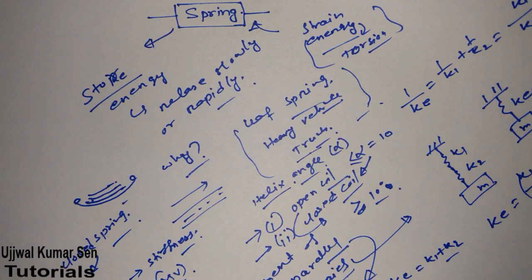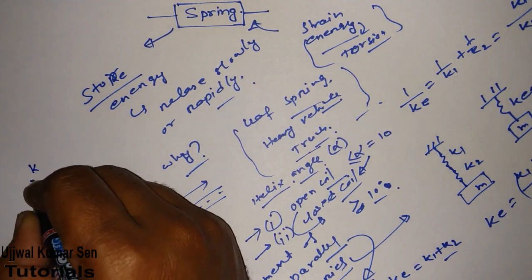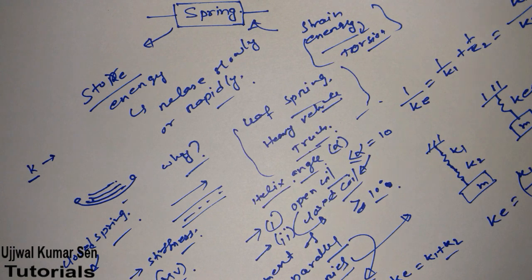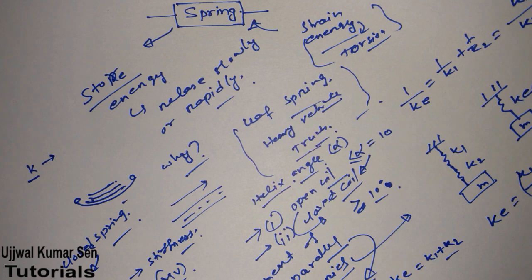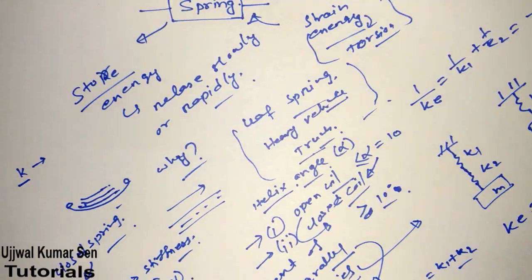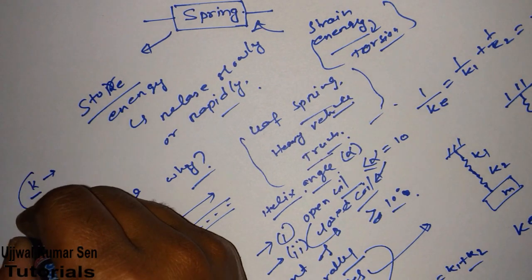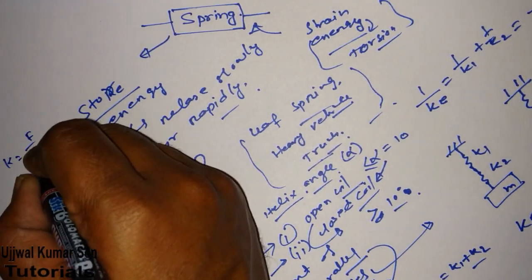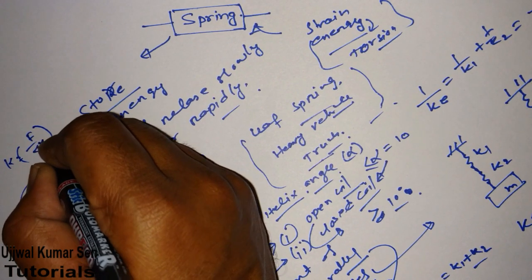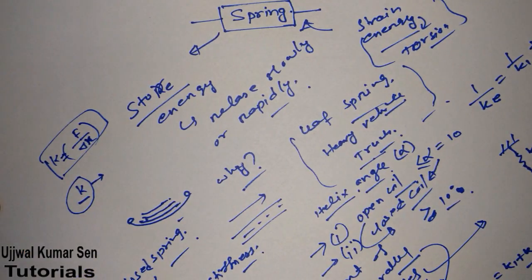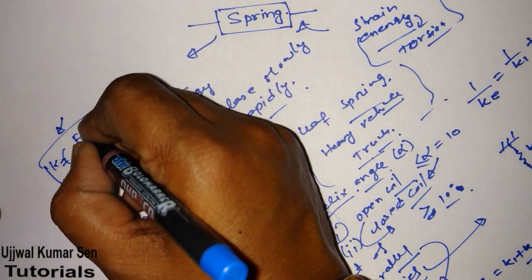The most important thing right now is the unit of stiffness — what is the unit of k, which we denote for stiffness? Can you guess how you find the unit of stiffness? I am going to share with you how to find it quite easily. We know stiffness k is equal to force divided by deflection delta-x: k = F / δx.